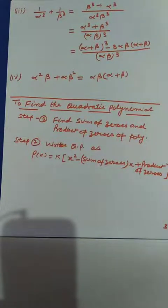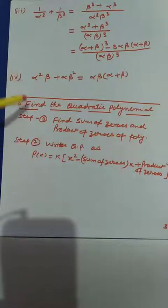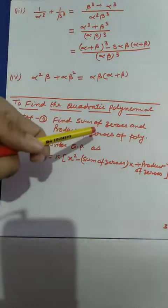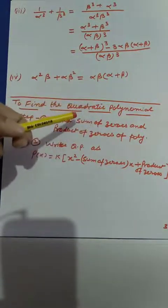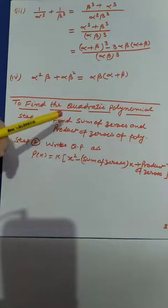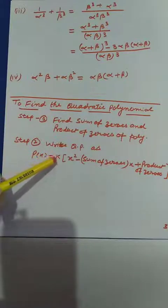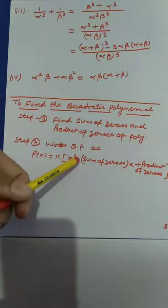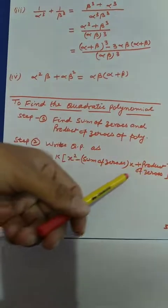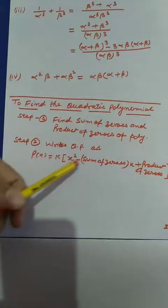Now we will learn one more concept today: how to find a quadratic polynomial when the conditional roots or zeros are given. Here we have to proceed in two steps. First, find the sum of zeros and product of zeros. Then use the formula: p(x) equals k times [x² minus (sum of zeros)·x plus (product of zeros)].